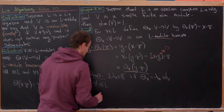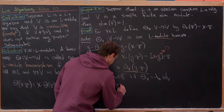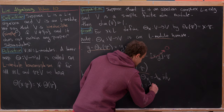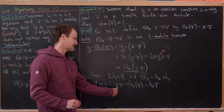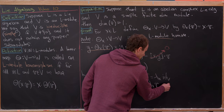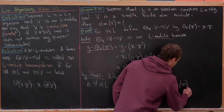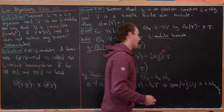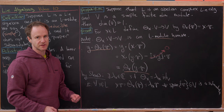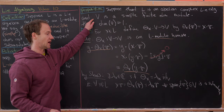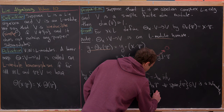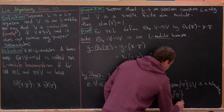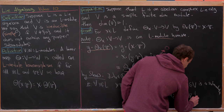So for all vectors v, acting by any x simply multiplies v by a scalar. That means the span of any single vector — a one-dimensional subspace — is a submodule. Since V is simple and has no proper non-trivial submodules, V itself must be one-dimensional. Thus dim(V) = 1, as claimed.